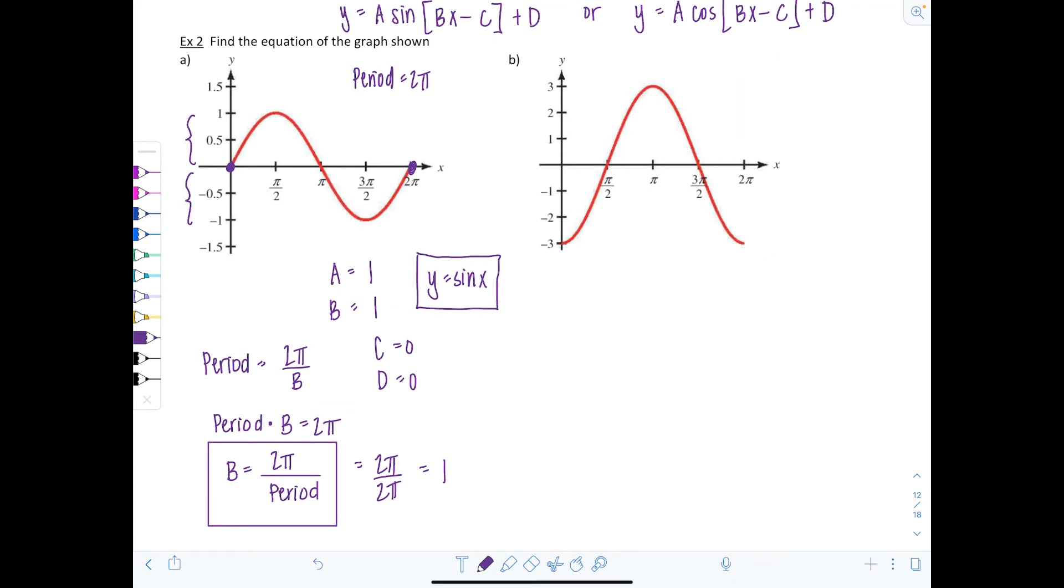Let's look at another example. Example B. This time I noticed that the graph starts all the way down at negative 3 as opposed to in the center. So for that reason, I'm going to choose cosine to represent this with the equation of a cosine graph. So we're going to use A cosine Bx minus C plus D.